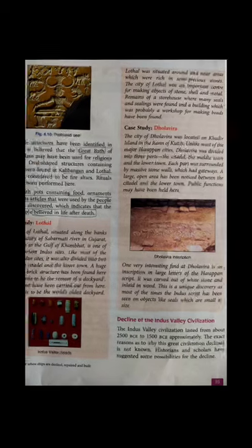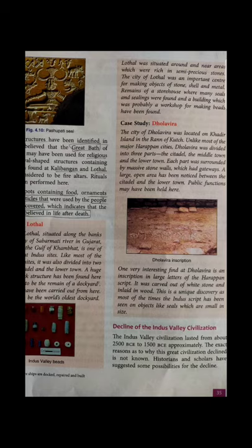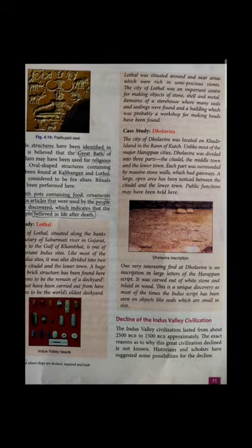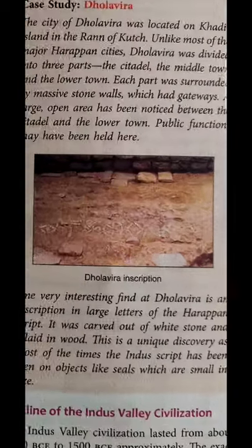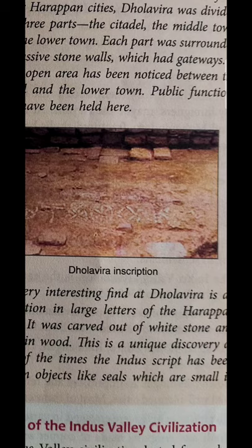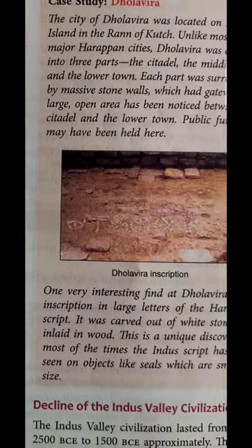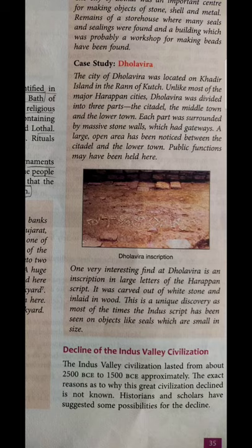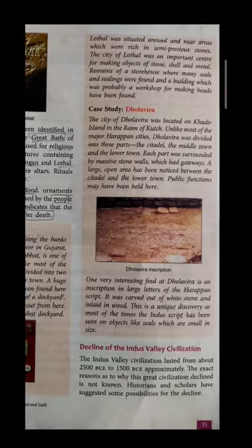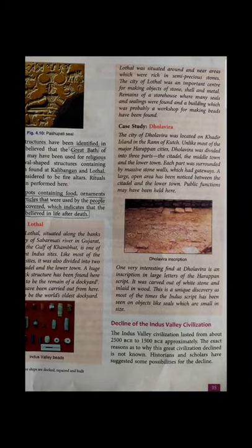The three parts of Dholavira are: the Citadel, the Middle Town, and the Lower Town. There is a massive stone wall known as a gateway, and a large open area in the Citadel. Here you can see that letters were written in white color using white stones — Dholavira has an inscription representing the Harappan script with large letters written there. Objects like seals, small in size, were also found at Dholavira.